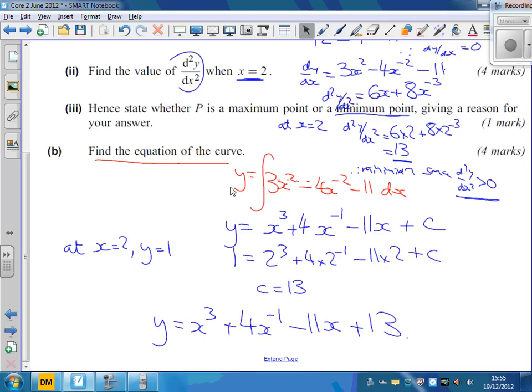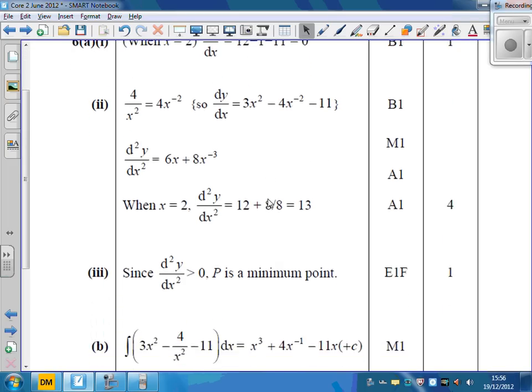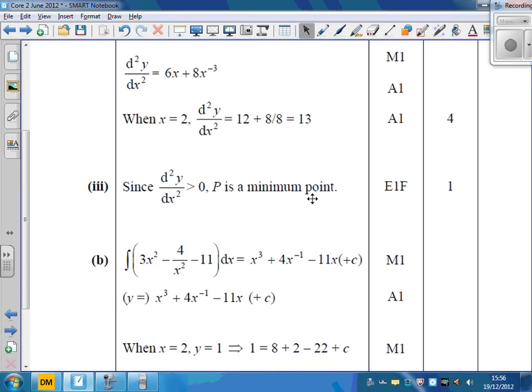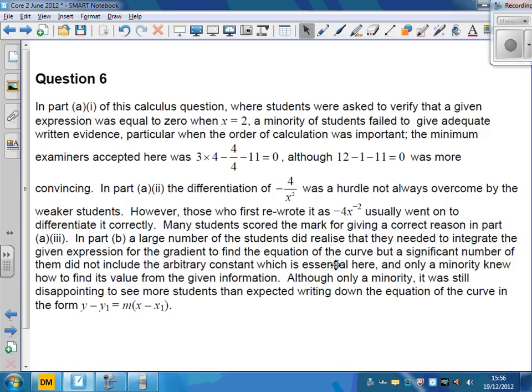So examiner said a lot of people didn't know what to do there, or even how to start it. So that's what you do. To get y, you integrate dy/dx. Here's the mark scheme. Make sure it does say you had to show that line there. You couldn't just say equals 0. Had to do some working there. Here's the reason it's bigger than 0, so it's a minimum. Here's the integrating and the finding of the c. Examiner's report for that one as well - a lot of people mucking that up, that moment where you had to change it to minus 4x to the power of minus 2.